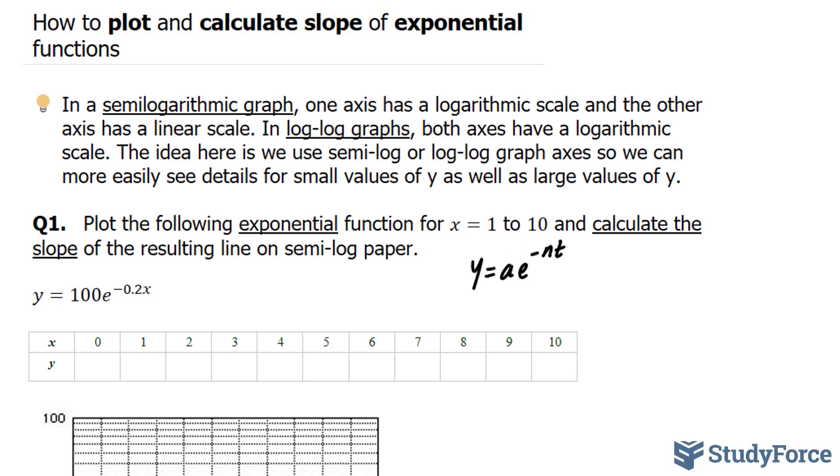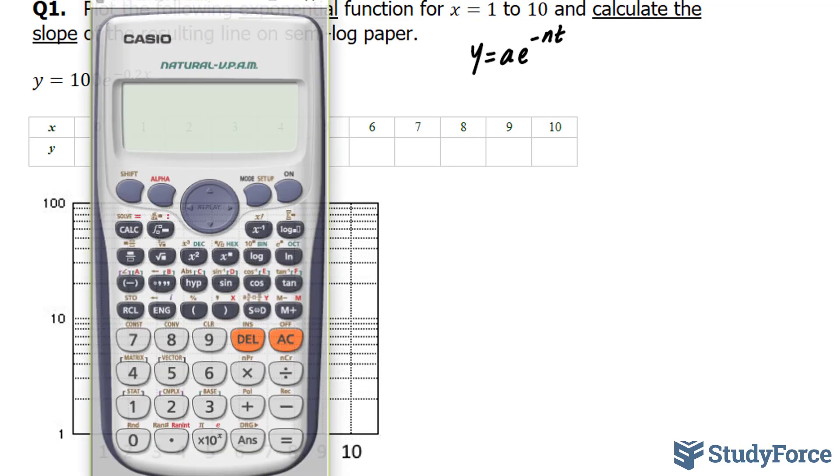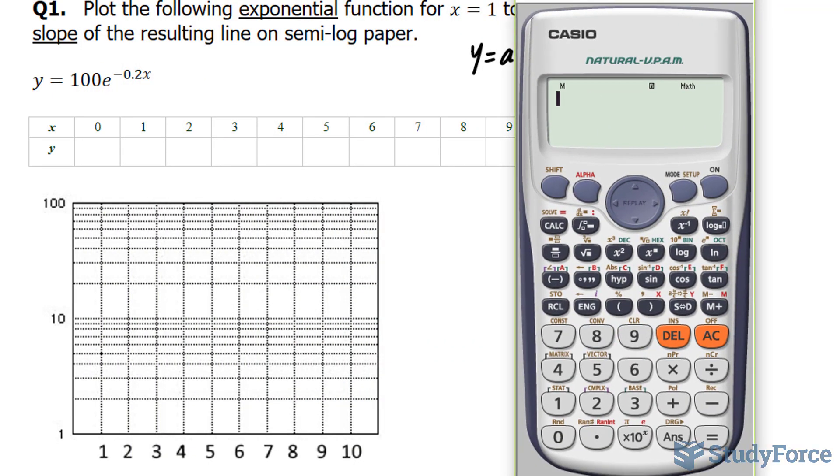The semi-log paper that I have is shown below. And I'll start off by evaluating what happens between 0 and 10. Even though the question mentions 1 through 10, it's always good to start off at 0. So using our calculator to do this, we have for the first point, 100 times e to the power of negative 0.2 times 0. And this gives us 100.